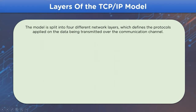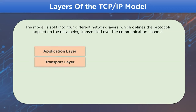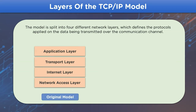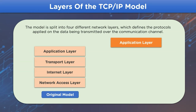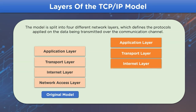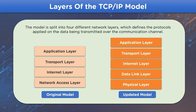The TCP/IP network model consists of different layers. The original model consists of four layers: application layer, transport layer, internet layer, and network access layer. The updated model consists of five layers: application layer, transport layer, internet layer, data link layer, and physical layer.